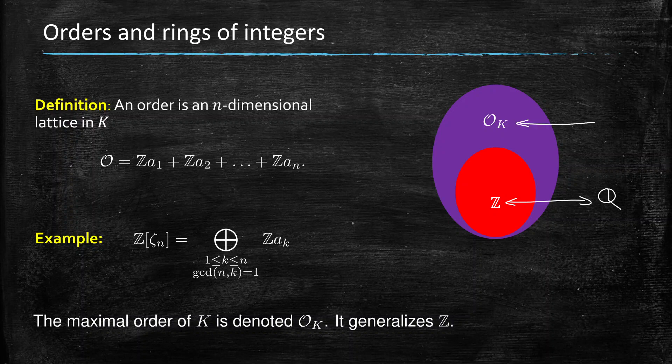Now Z of alpha is not always the maximal order. It happens, but it may not. So Z of alpha is going to be inside of the maximal order and may or may not be equal. So as an example, we give the ring of integers of a cyclotomic field. And this is an order and it can be shown to be maximal, Z of zeta n, which is just the sum of all the ak, where ak is just the powers of zeta n. So really, this notion of maximal order is really important.